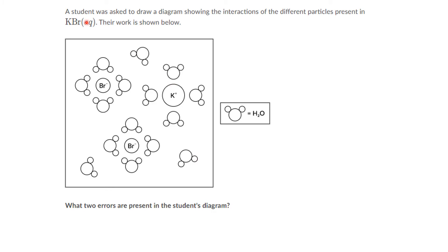Now let's look at some questions. A student was asked to draw a diagram showing the interactions of different particles present in KBr aqueous solution. Their work is shown below. The question is: what two errors are present in the student's diagram? The water molecule is shown with the bigger circle as oxygen and two smaller circles as hydrogens. The potassium ion is surrounded by the oxygens of the water molecule.